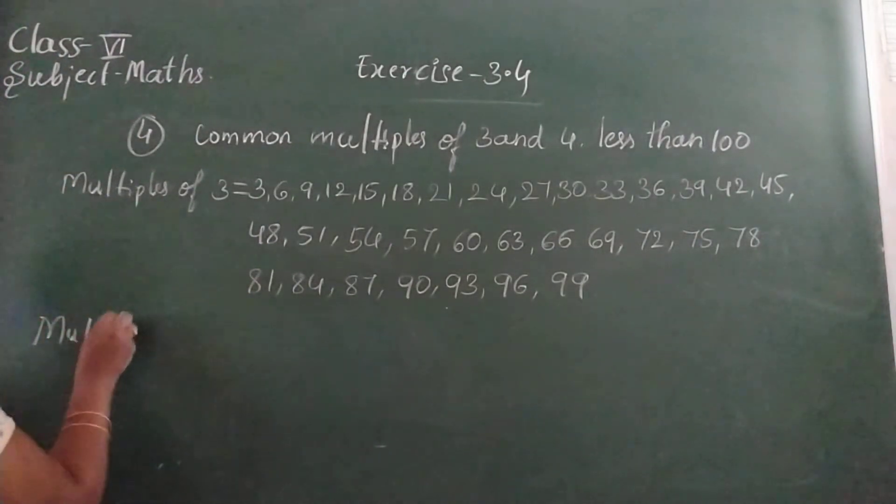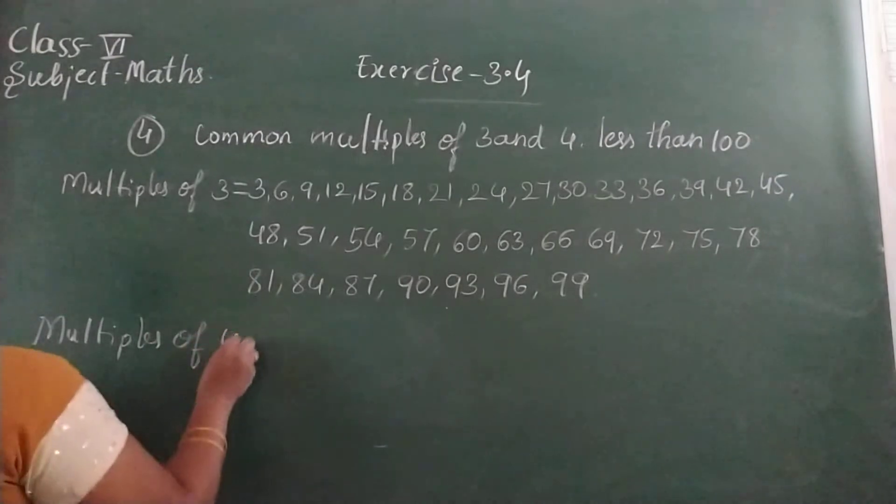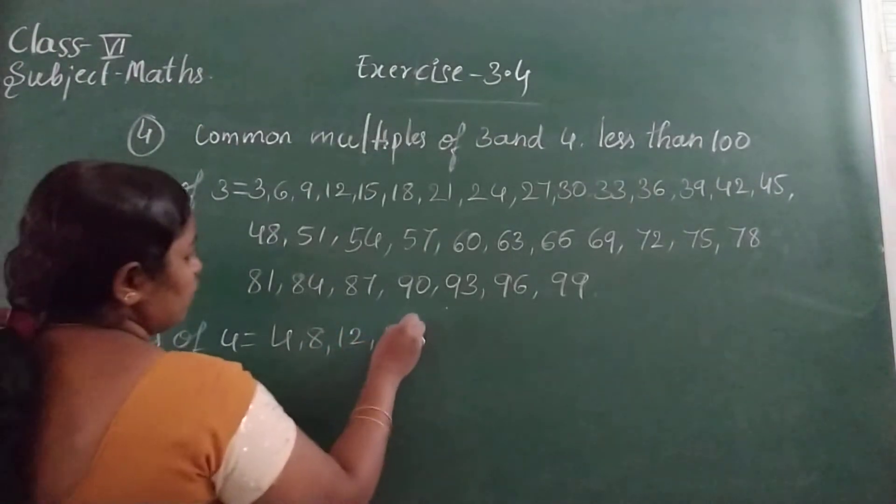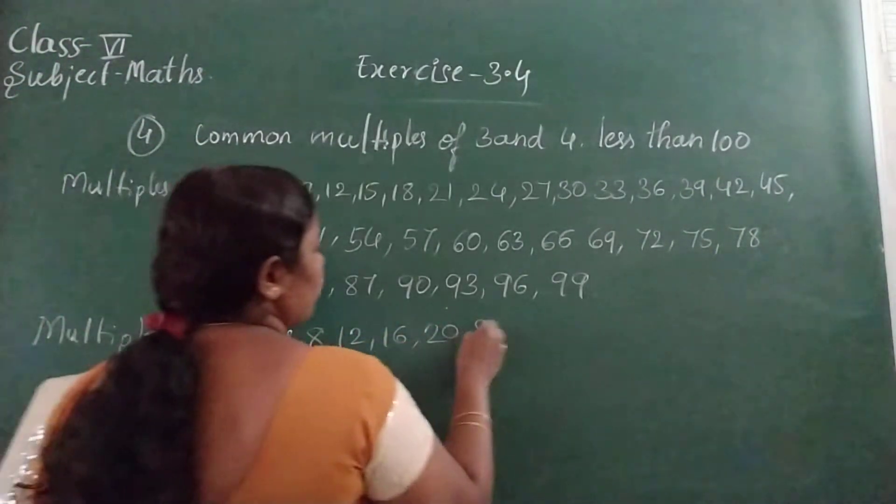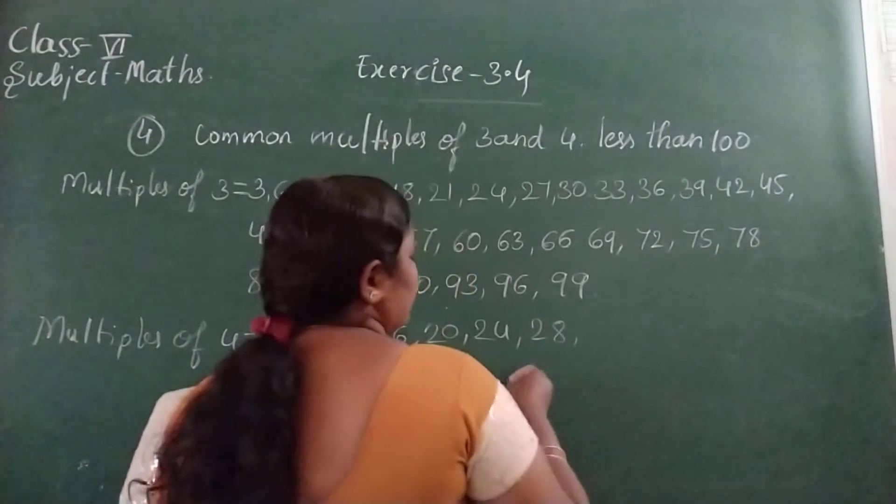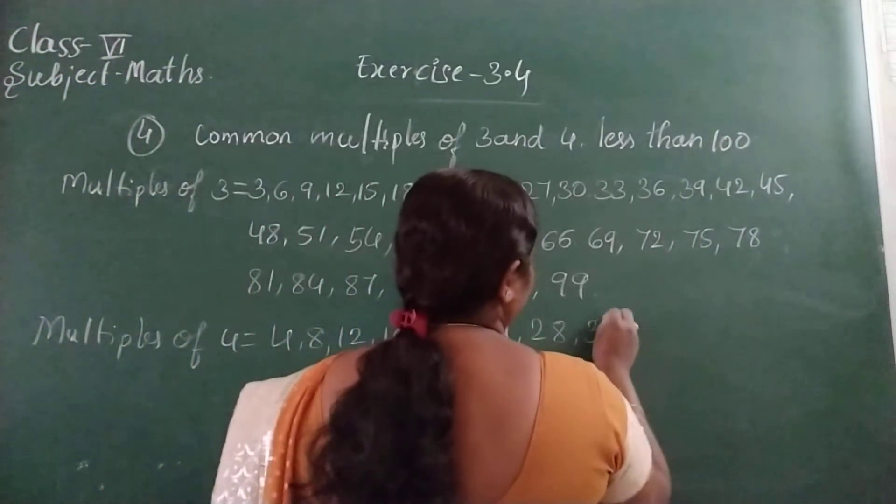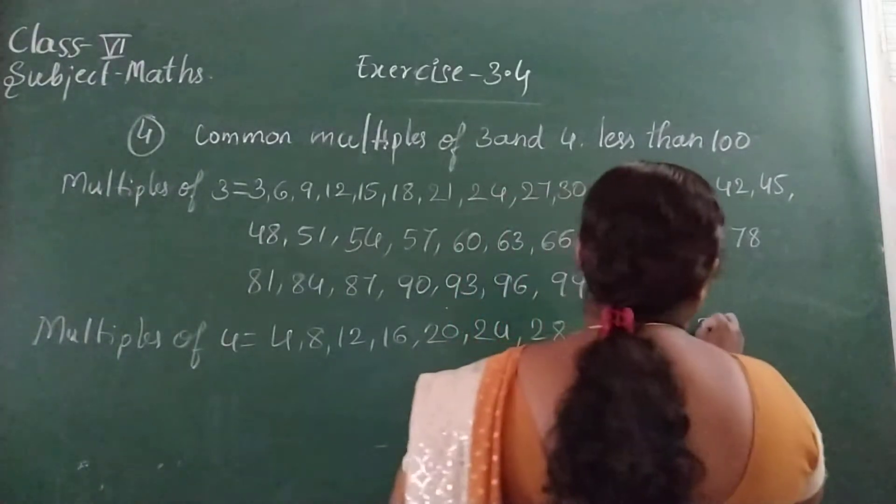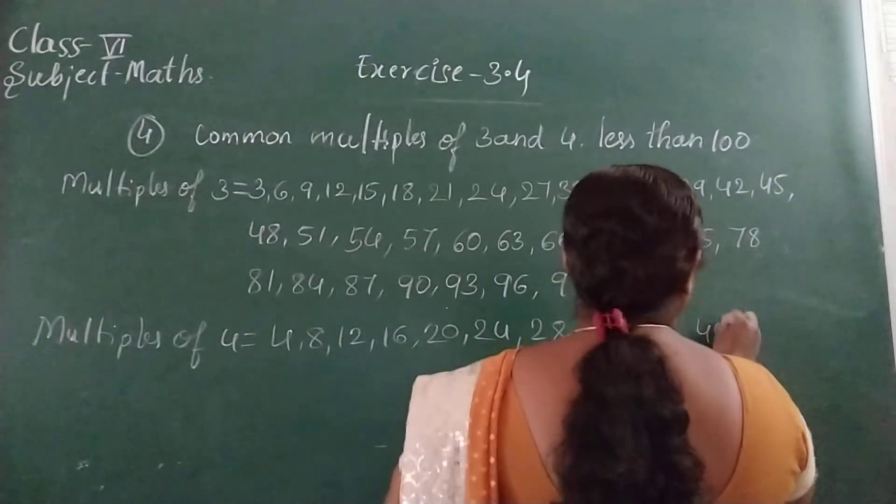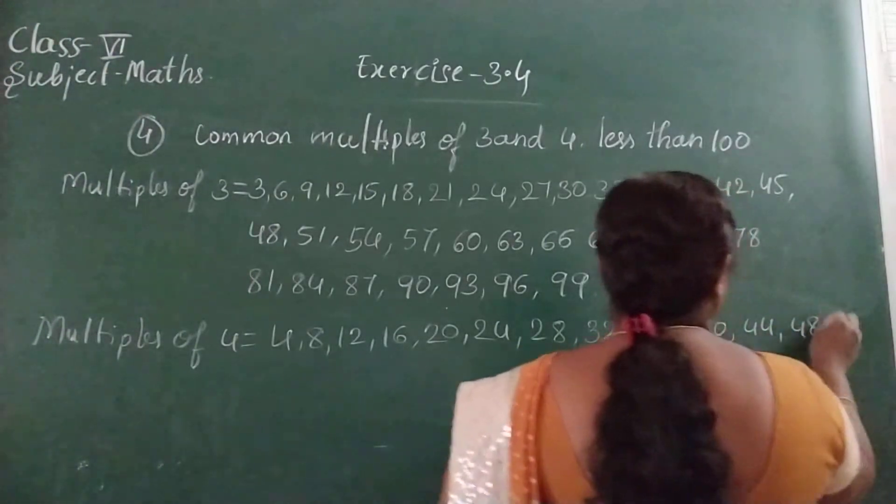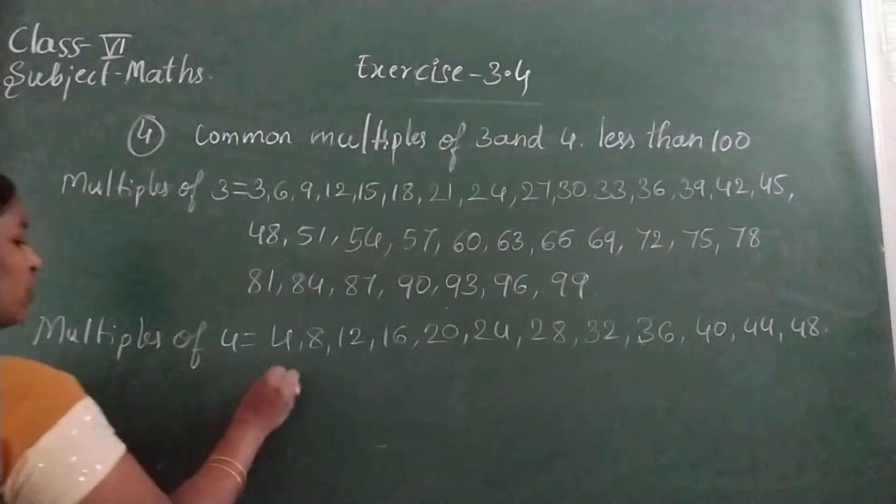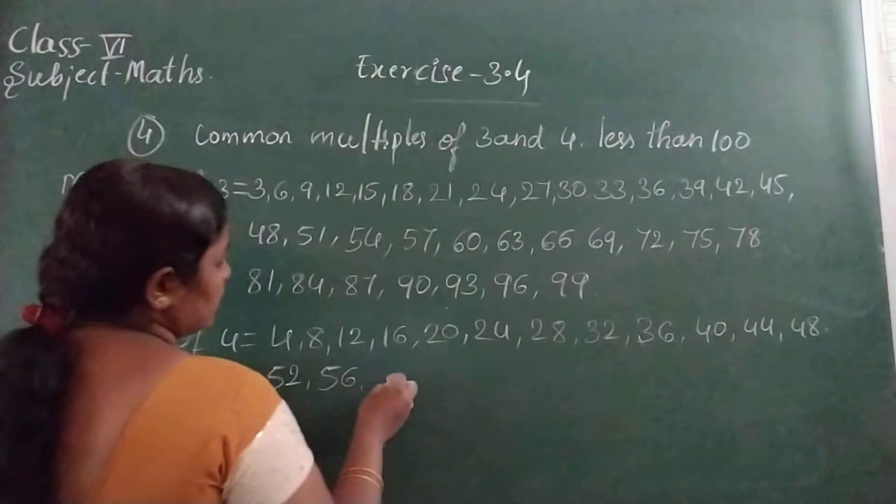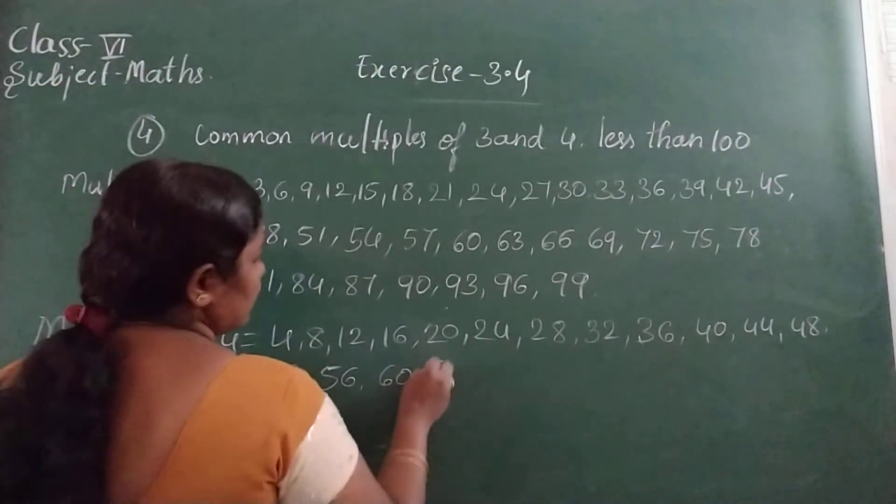Then multiples of 4. List these out also: 4, 8, 12, 16, 20, 24, 28, 32, 36, 40, 44, 48, 52, 56, 60, 64.